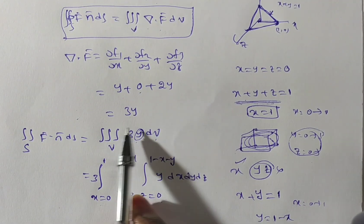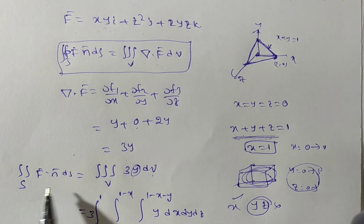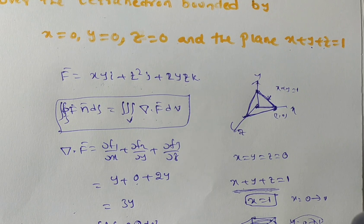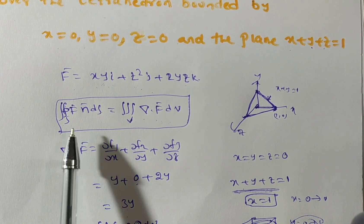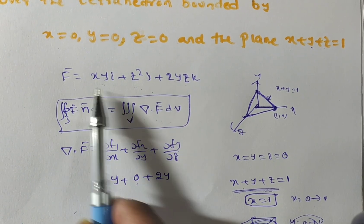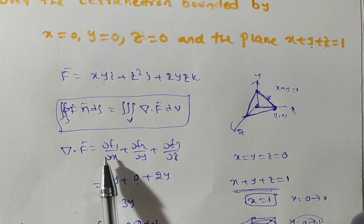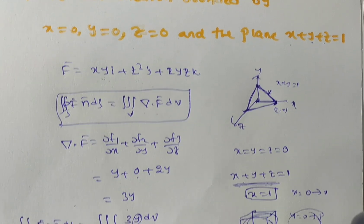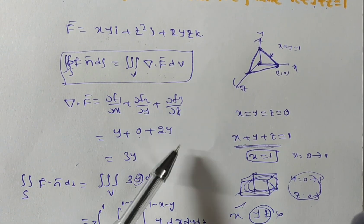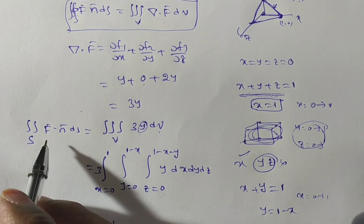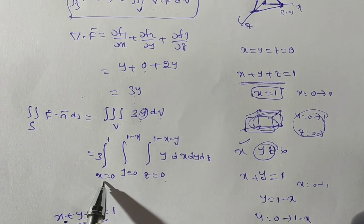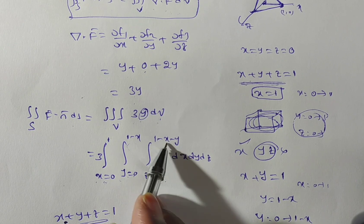We have the triple integral: 3 times integral over V of y dV. I choose x as the independent variable. So: x from 0 to 1, y from 0 to 1 − x, z from 0 to 1 − x − y. Z is dependent on two variables, y is dependent on one, and x is independent. The rule is: integrate first with respect to the variable dependent on the most others. So integrate with respect to z first.